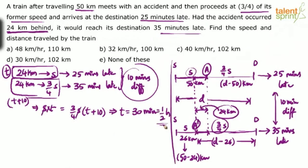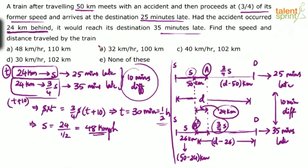Time taken to cover 24 kilometers at original speed S is half an hour. So speed = distance ÷ time = 24 ÷ 0.5 = 48 kilometers per hour. This eliminates options B, C, and D. The answer is either option A or option E.